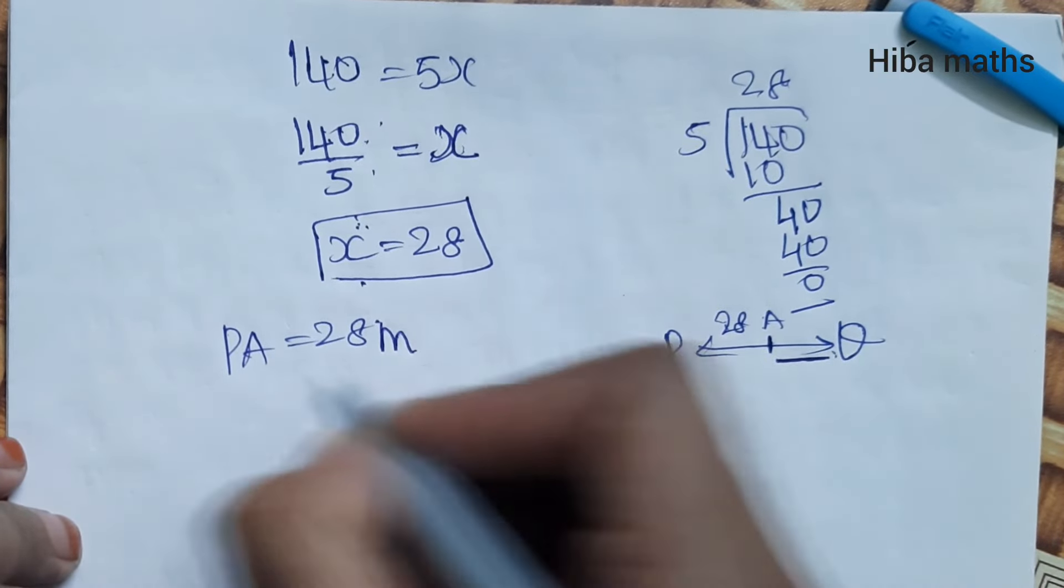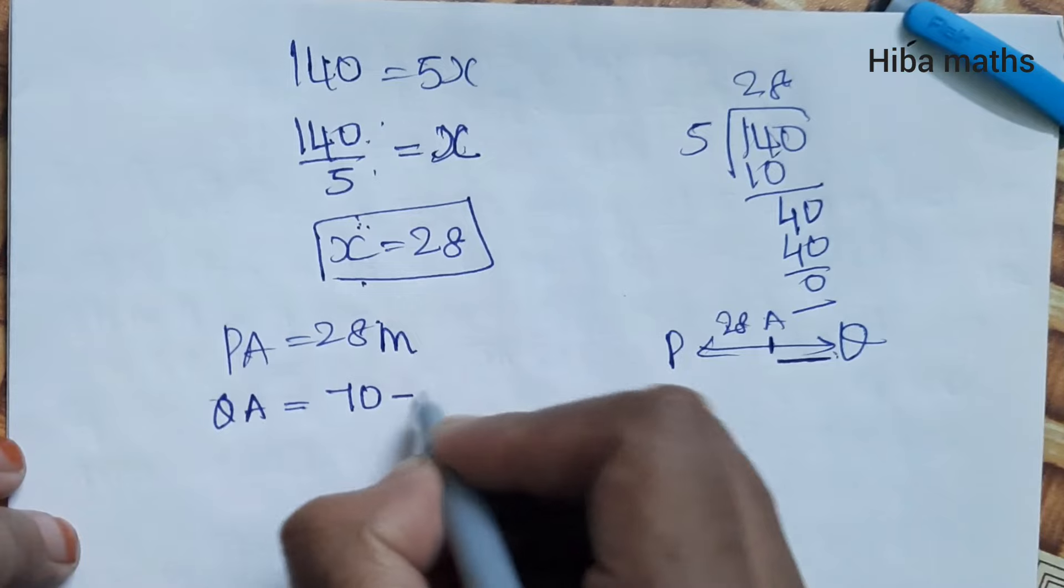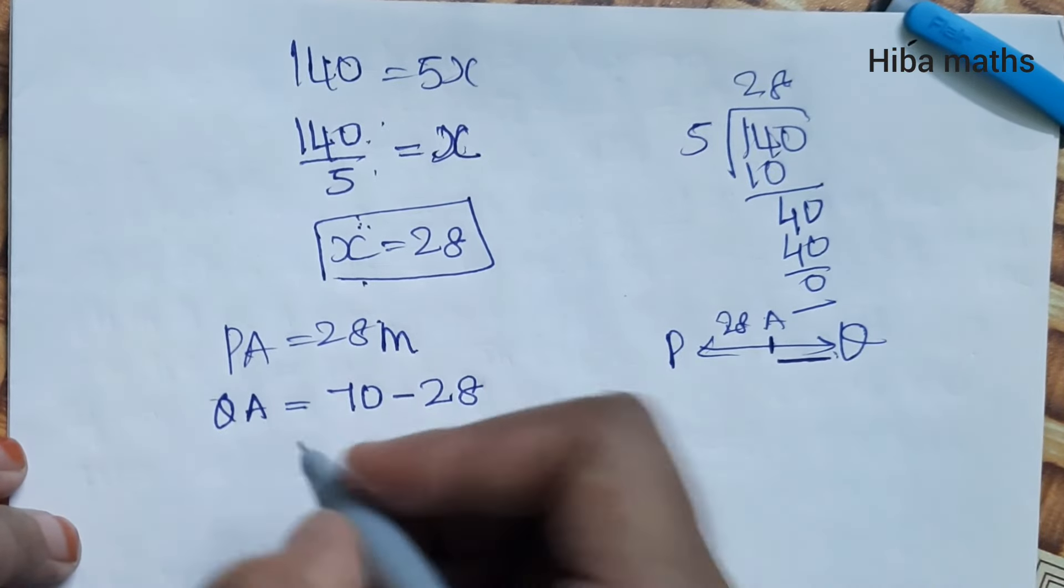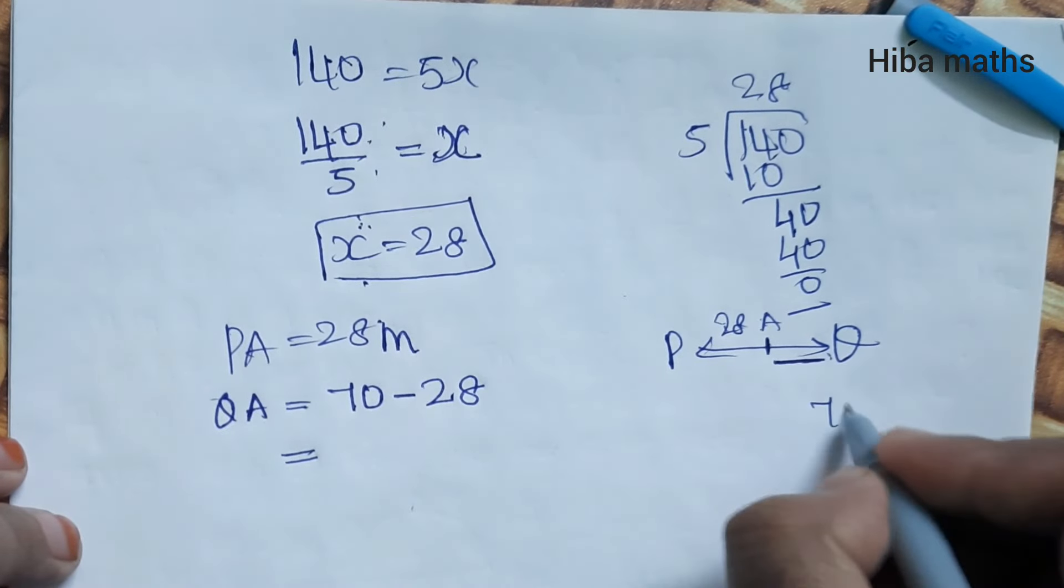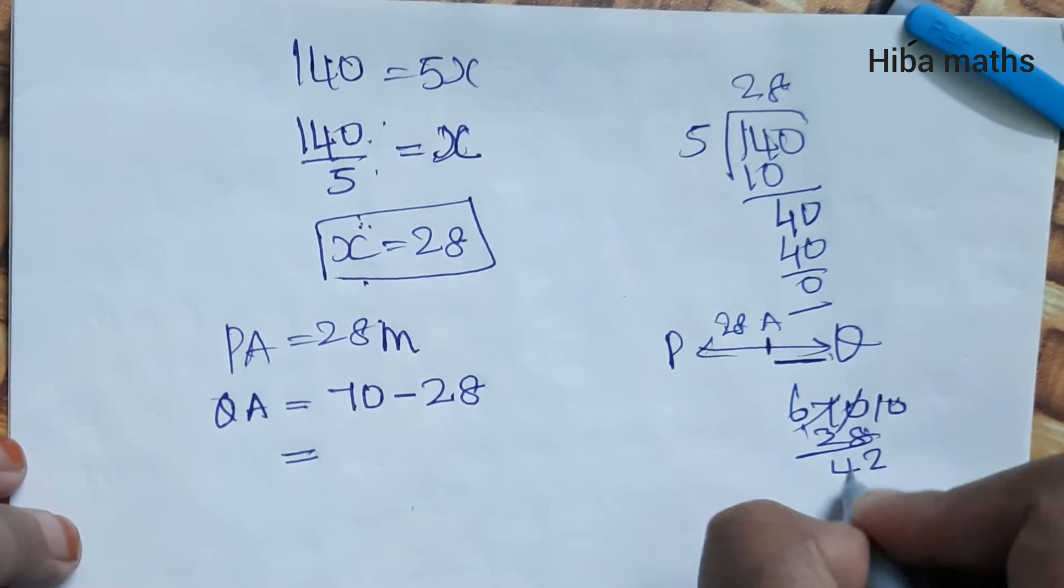QB equals 70 minus x. Now x is 28. 70 minus 28: 10 minus 8 is 2, 60 minus 20 is 40, plus 2 is 42. So 42 meters is this distance.